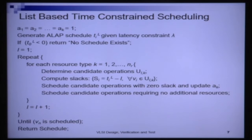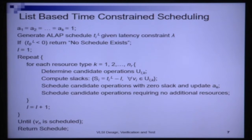We looked at the optimal version of that problem and today we will look at heuristic solution strategies. The first heuristic solution strategy is a list-based strategy. When we talked about list-based scheduling in the resource constraint scheduling problem, we said the basic strategy is to progress time step by time step. In each time step there are a set of ready-to-schedule operations with defined priorities, and for each resource type we schedule the highest priority operations.